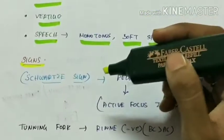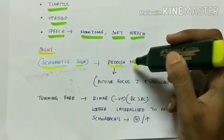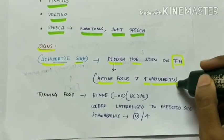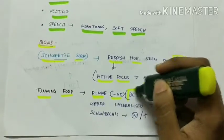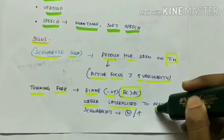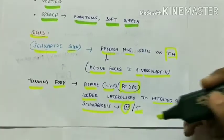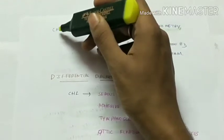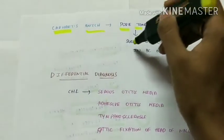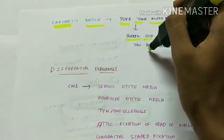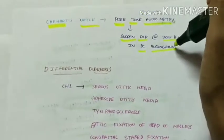An important sign is the Schwartz sign, in which a reddish hue is seen on the tympanic membrane due to an active focus with increased vascularity. On tuning fork tests, Rinne's test is negative because bone conduction is greater than air conduction. Weber's test is lateralized to the more affected side due to conductive hearing loss. The characteristic finding on pure tone audiometry is Carhart's notch — a sudden dip at 2000 Hz in the bone conduction audiogram.